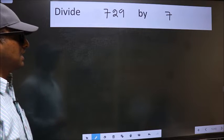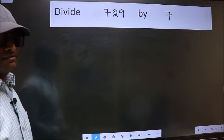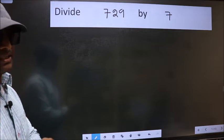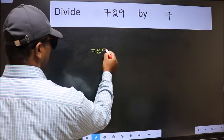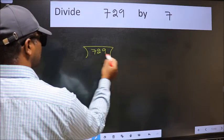Divide 729 by 7. To do this division, we should frame it in this way: 729 here and 7 here.